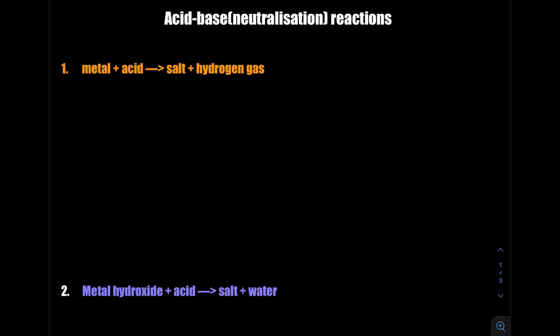The first one we're going to look at is a metal with an acid. When you react an acid with a metal, it's going to produce a salt. When we talk about the salt, we're talking about an ionic compound — a metal with a non-metal. And the byproduct is going to be hydrogen gas, all the time.